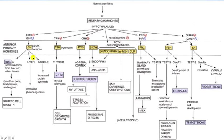Another target would be the liver, where it increases gluconeogenesis. Insulin-like growth factor, or somatomedins, would be produced from the liver and go to different body tissues to facilitate growth. So growth hormone, as the name suggests, is important for growth.